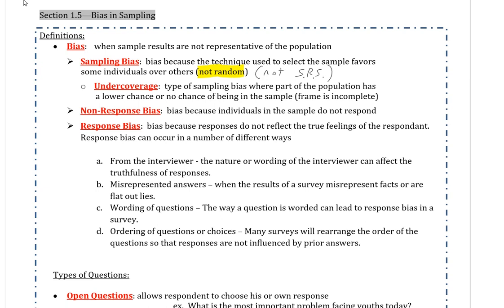Thirdly, response bias is the other coin. They did respond, but they responded in a problematic way. Bias because responses do not reflect the true feelings of the respondent. That doesn't necessarily mean they lied, although that could be an instance. Sometimes people respond because they're afraid of how it's going to affect them. That's sometimes called perceived lack of anonymity, where if you don't think your answer is anonymous, that could influence your response. That can be response bias.